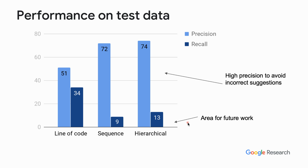The results of this model are on the right side of this graph. We optimize the model for high precision, so at 74% precision we obtain 13% recall of the true comment locations. Although this is low recall, the predictions would be highly useful because they are very accurate. At the same time, the low recall offers a lot of scope for future work.